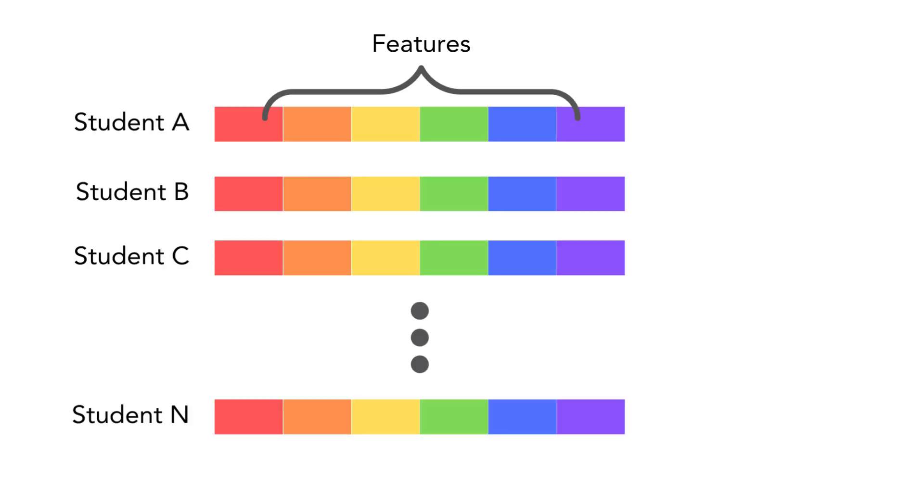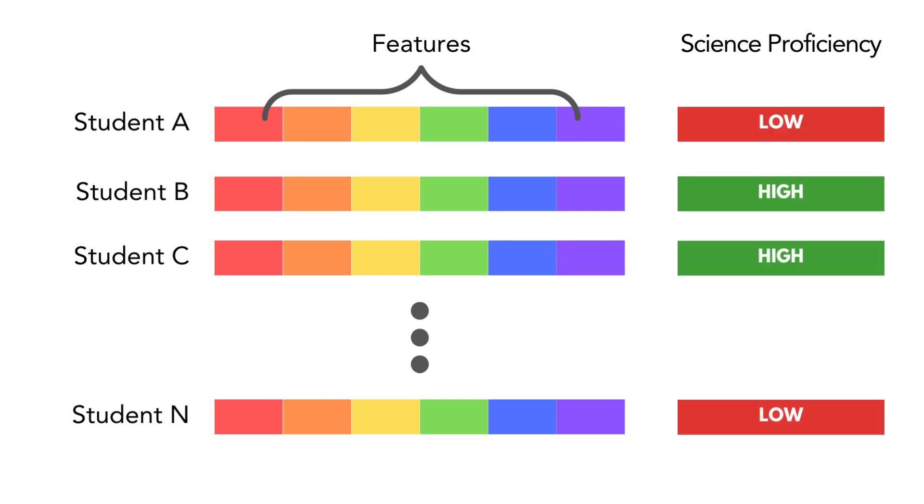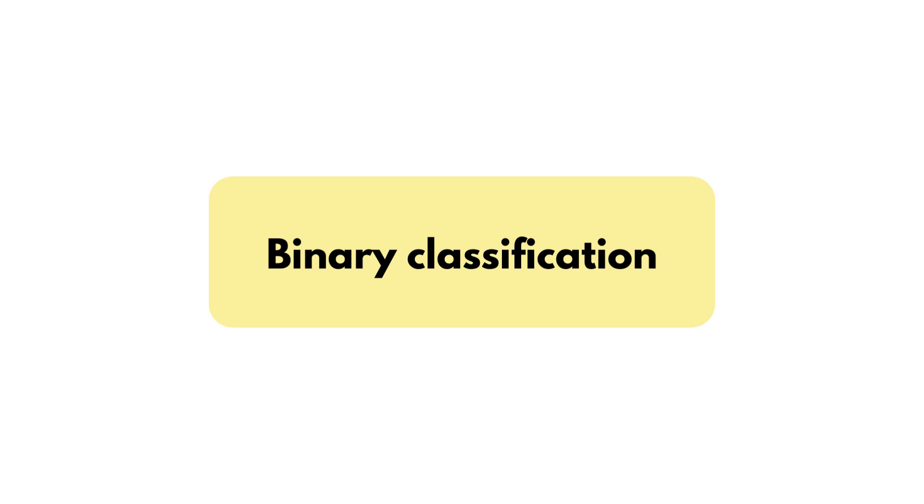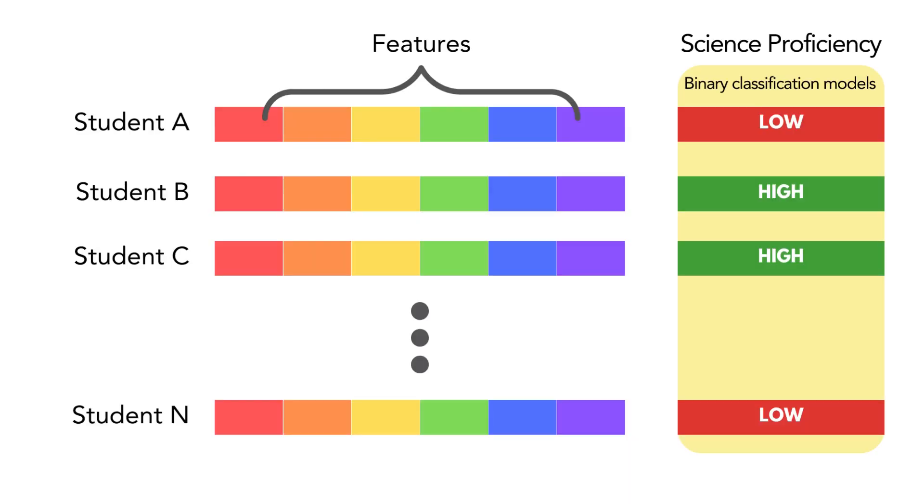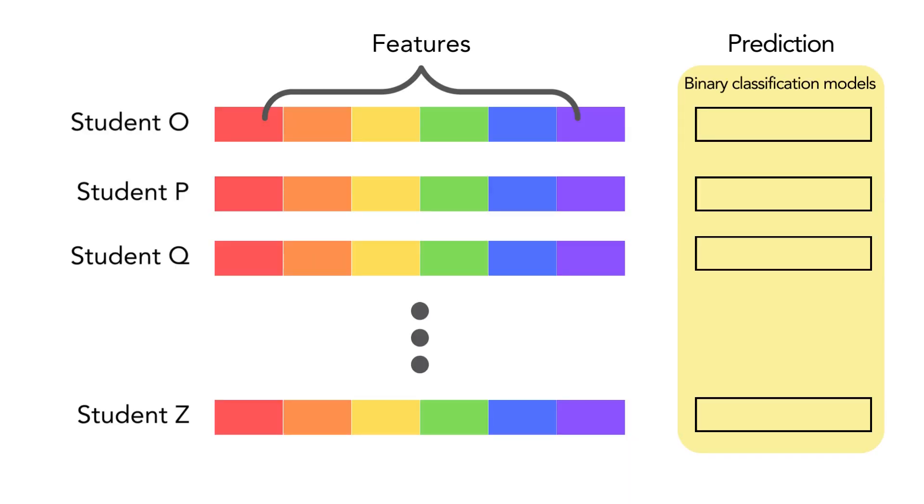On the PISA 2018 Philippine data, where the features were the student and school level factors and the target variable the science proficiency level, we employed the machine learning techniques of binary classification, where we trained binary classification models to predict whether a Filipino student had low or high science proficiency.